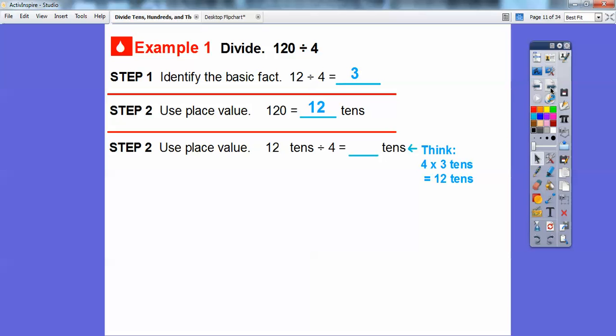We're going to use place value. 12 tens divided by 4—well, remember 12 divided by 4 equals 3, so 12 tens divided by 4 equals 3 tens, which equals 30.